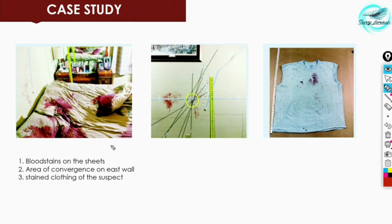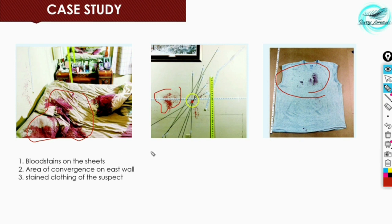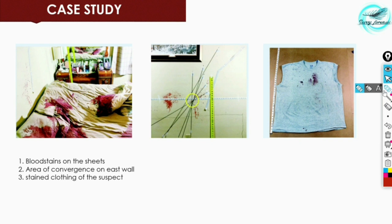These photographs from the case show blood stains on the sheets, where the area of convergence was calculated from stains present at the scene. Blood stains are also visible on the clothing material of the suspect. Through all this analysis, investigators obtained potential leads that directed the investigation toward positive results.